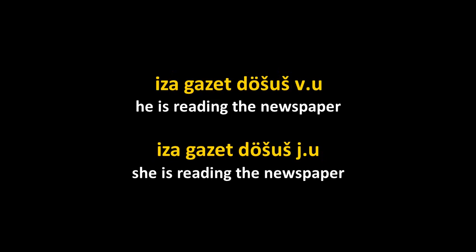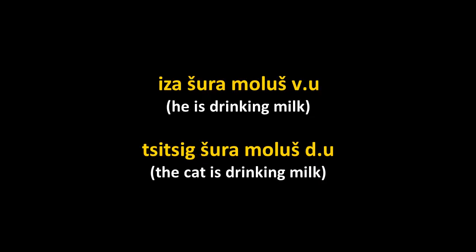'She is reading the newspaper' would be isa gazet dershush yu — the auxiliary verb agrees with her, changing to Y. 'He is drinking milk': tzitzig shura molosh vu. Tzitzig is a D-category noun, but shura ('milk') also requires D agreement for the auxiliary, so it becomes du. Tzitzig shura molosh du — 'the cat is drinking milk.' Here molosh is a verb without prefix agreement.